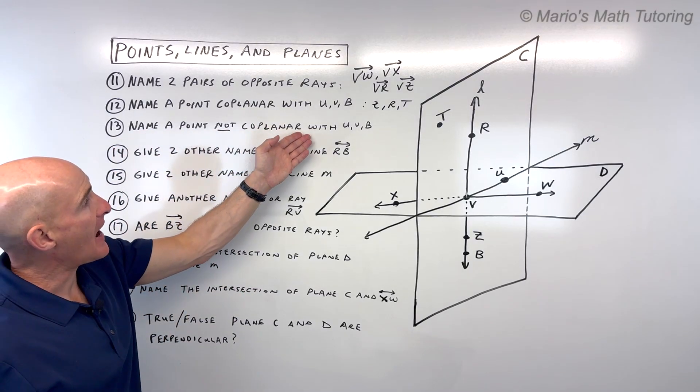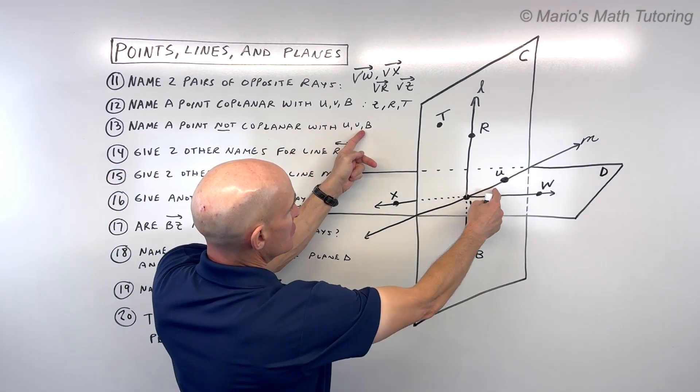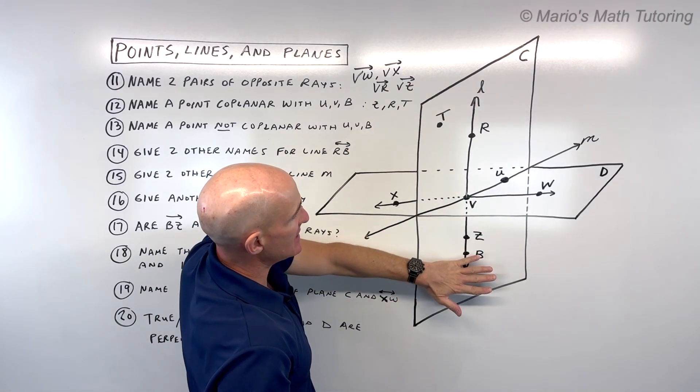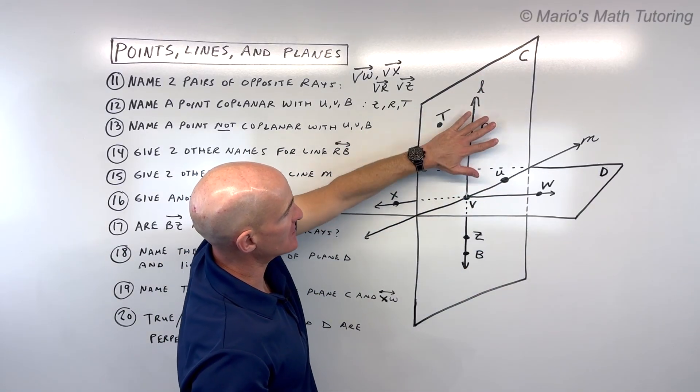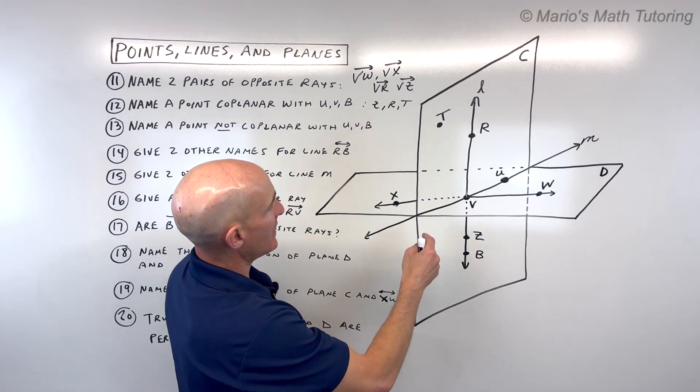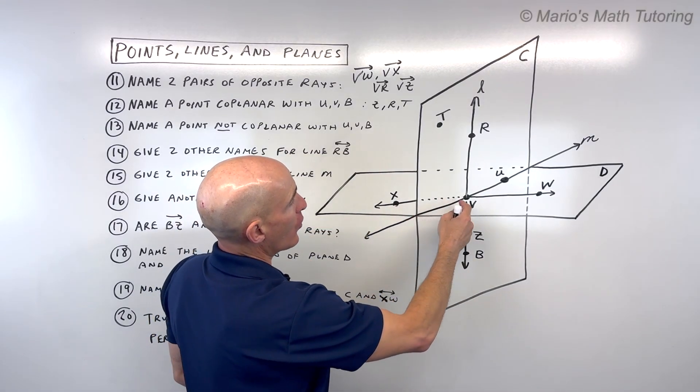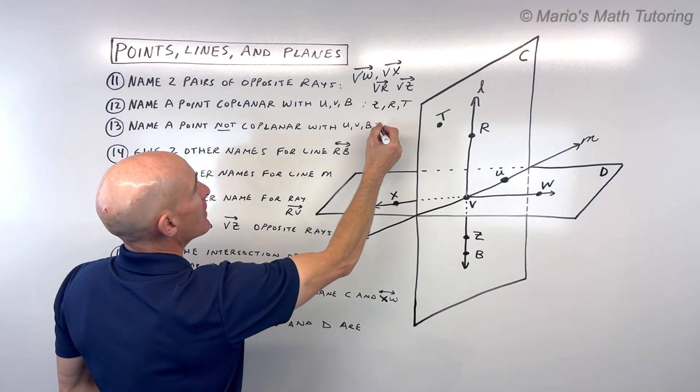For number 13, name a point that's not coplanar with U, V, and B. U, V, and B, again, that's plane C, not in that same flat surface, would have to be something like X or W.